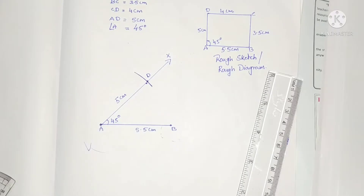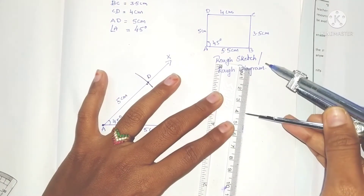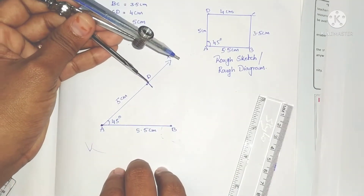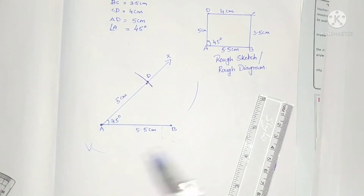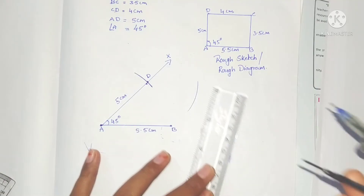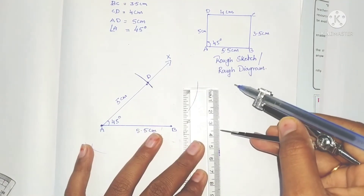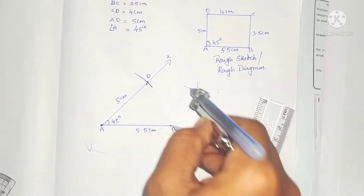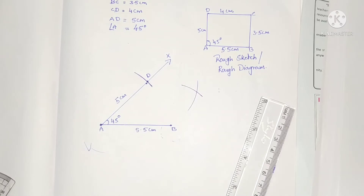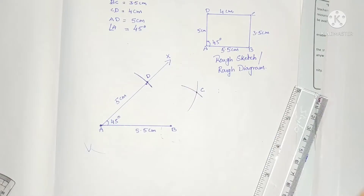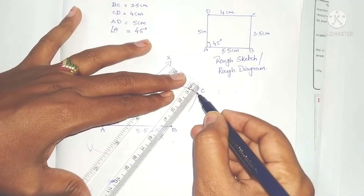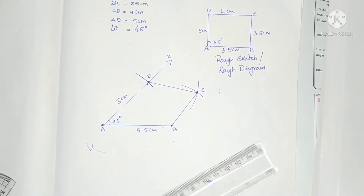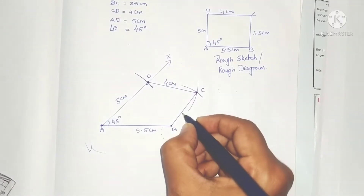The length of CD is 4 centimeters. Measure 4 centimeters with the scale, set the compass, and taking D as center draw an arc. BC is 3.5 centimeters, so measure 3.5 centimeters and taking B as center draw another arc. The intersection of these two arcs is vertex C. Join BC and CD with the scale to complete the required quadrilateral.